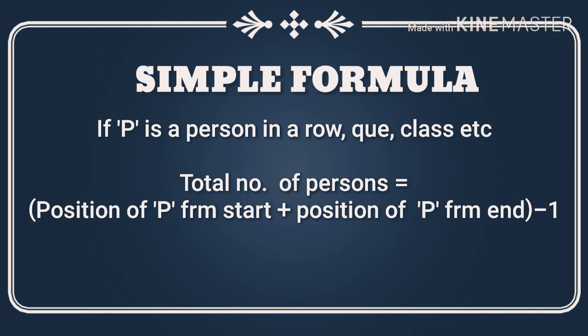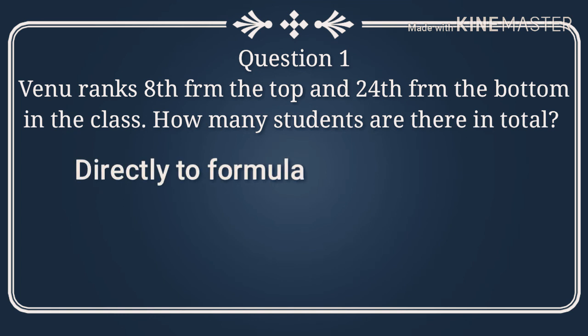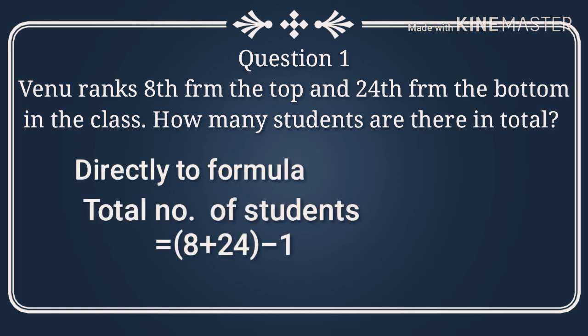So question number one: we know ranks 8 from the top and 24 from the bottom in the class. How many students are there in total? Using the formula, total number of students equals 8 plus 24 minus 1. The answer is 31.